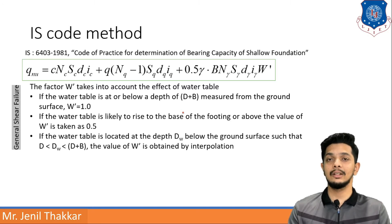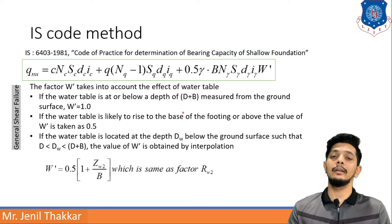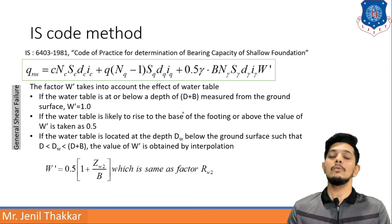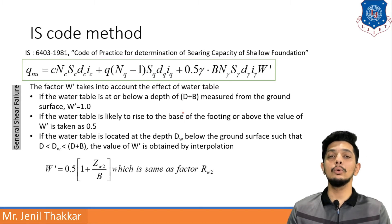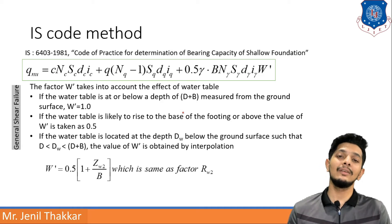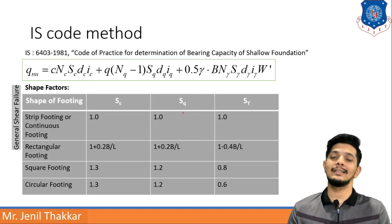If the water table is located at a depth Dw below the ground surface such that D < Dw < D + B, then W dash is interpolated using the formula: W dash = 0.5(1 + Dw/B), which is equivalent to the factor Rw2 studied in Terzaghi's theory.